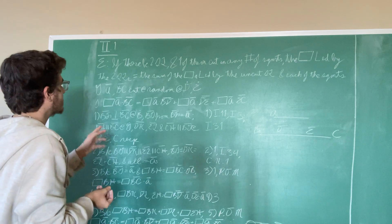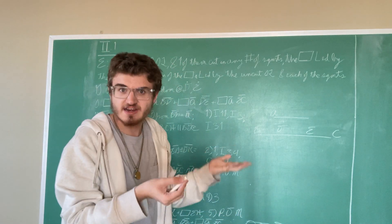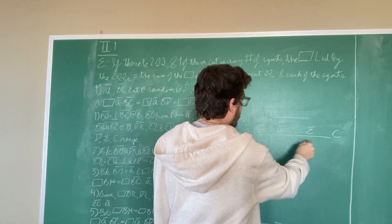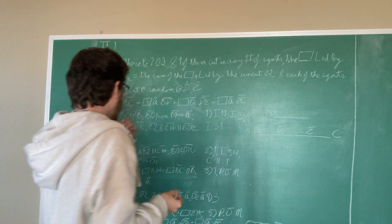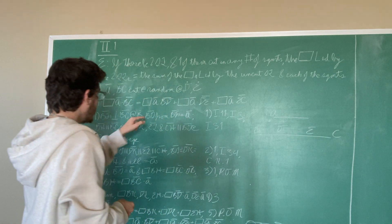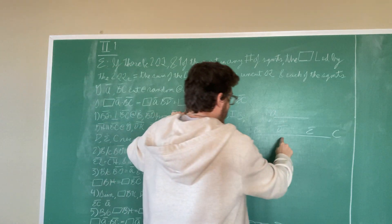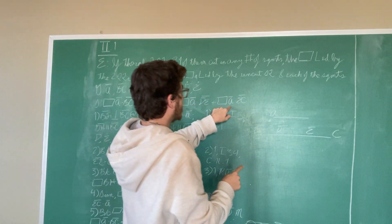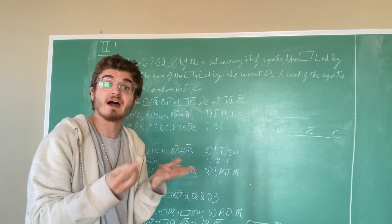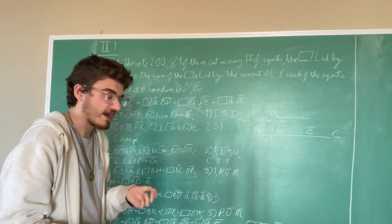So given two straight lines, we will call these A and BC, and we will say that BC is cut at random intervals — any number of them. Euclid has chosen two and so have I, at random points D and E. This states that the rectangle contained by A and BC will equal the rectangle contained by A and BD, plus the rectangle contained by A and DE, plus the rectangle contained by A and EC. So when he talks about segments, it's just the parts made by the points on the straight line.